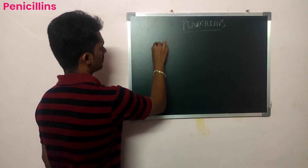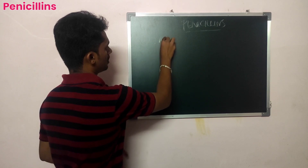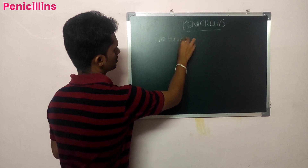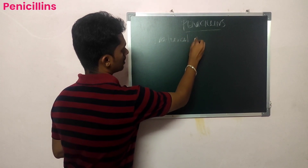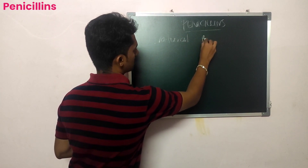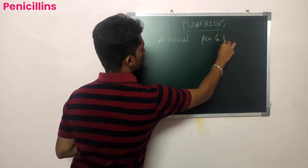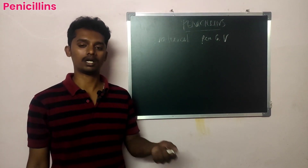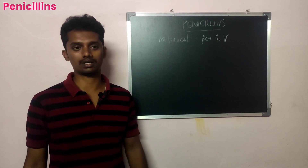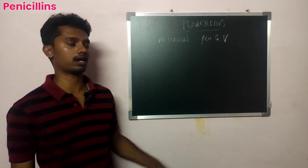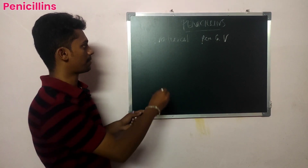So in the first category of classification — natural drugs. For example, Penicillin G and Penicillin V. These two are extracted from natural microorganisms.